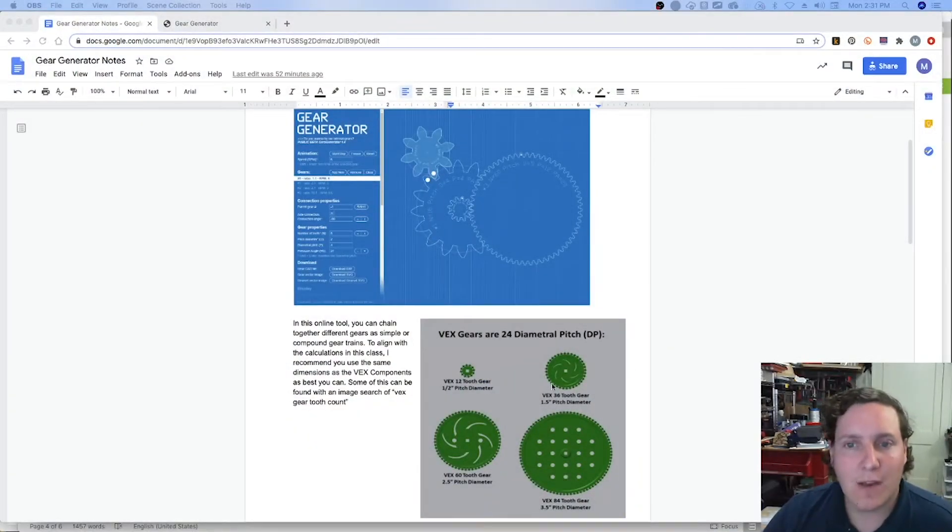For us to maintain the premise of if we were doing this in real life, we'd be using Vex robotics parts. I was able to find this image that gives us the actual number of teeth and the pitch diameter, the size of those gears.